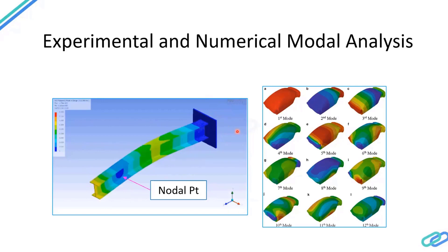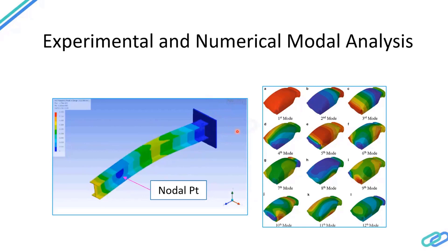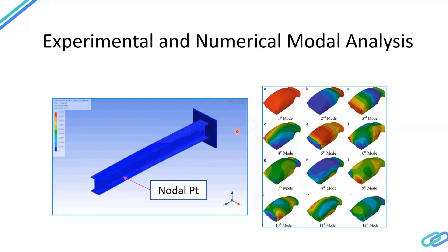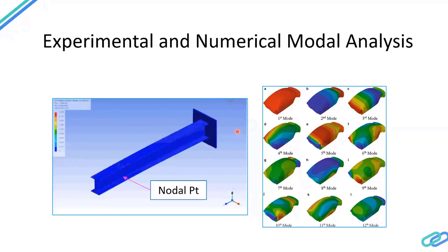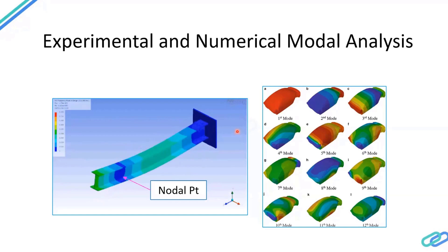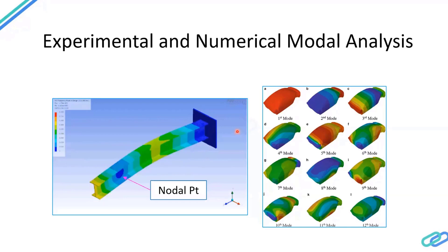Finding nodal points at the vehicle level is very useful. These nodal points are excellent candidates for suspension mounts. If you want to mount the chassis, the ideal location would be a nodal point, because they have minimal amplitude for global vibration.